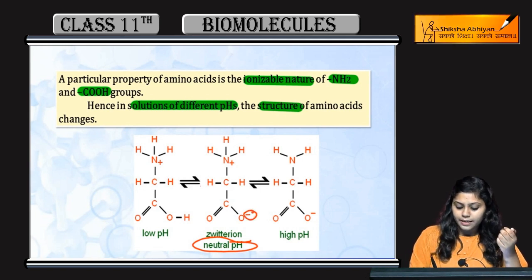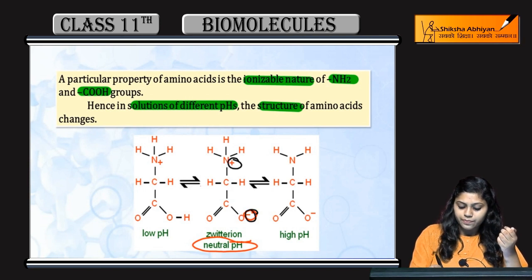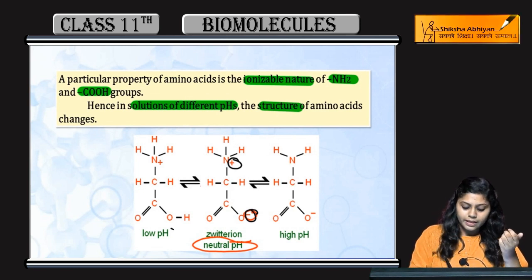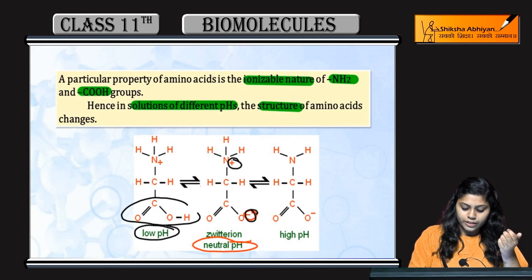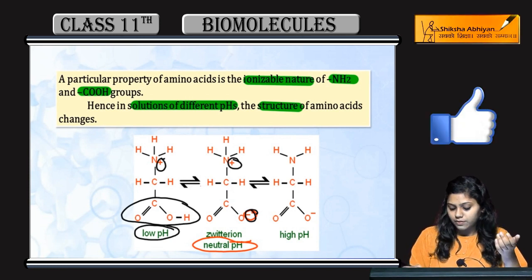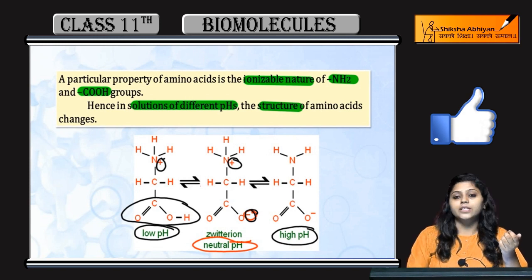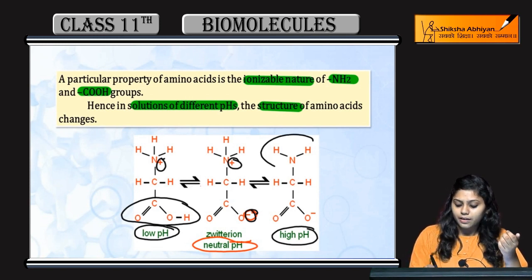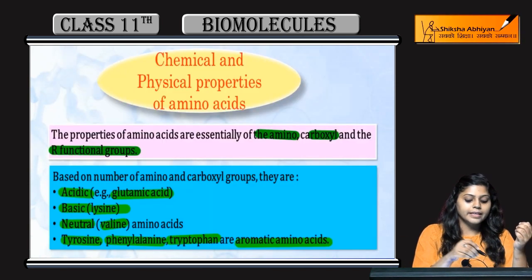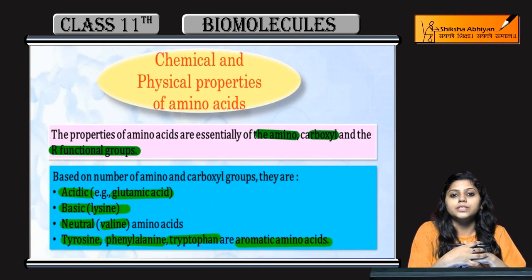Amino acids have some particular properties. These are the physical and chemical properties of amino acids.